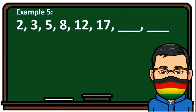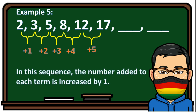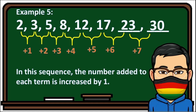Example 5. The number pattern is 2, 3, 5, 8, 12, 17, and the next two numbers are blank. Between 2 and 3, you add 1. Between 3 and 5, you add 2. Between 5 and 8, you add 3. Between 8 and 12, you add 4. Between 12 and 17, you add 5. In this sequence, the number added to each term increases by 1. So 17 plus 6 equals 23, and 23 plus 7 equals 30. The missing numbers are 23 and 30.